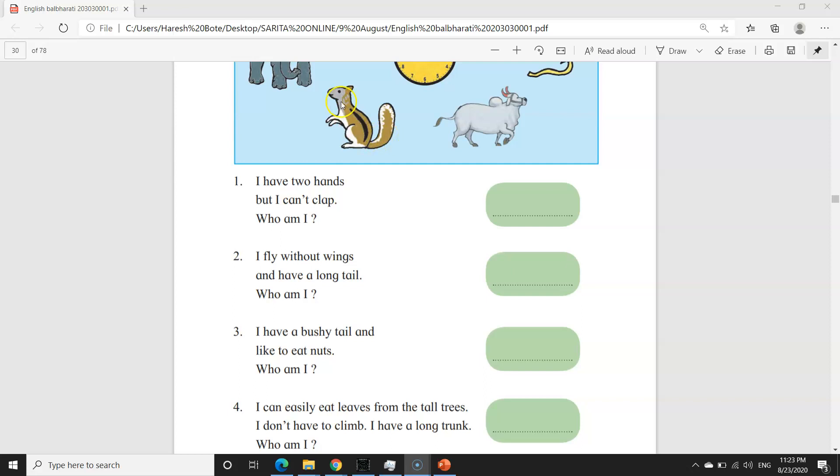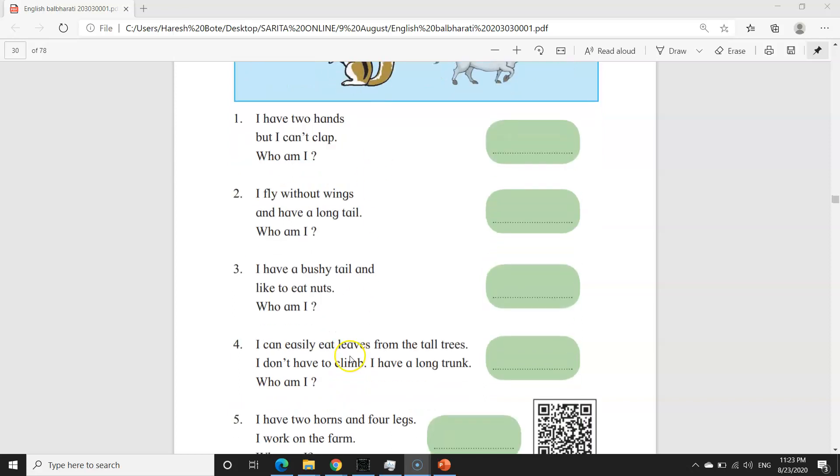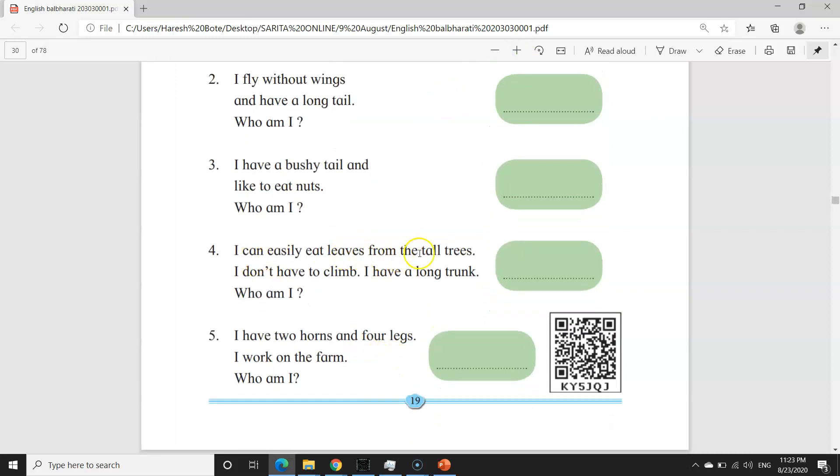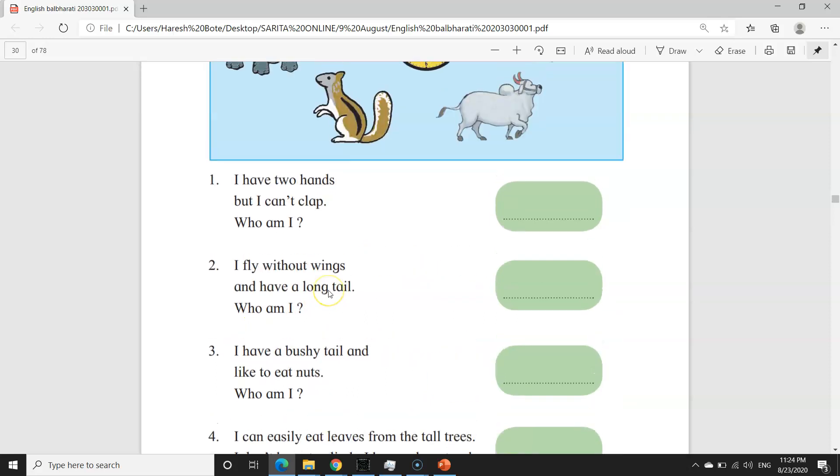Fourth. I can easily eat leaves from the tall trees. Easily manzhe sahach pane, leaves manzhe pane, from manzhe chavarun, tall manzhe unca, trees manzhe zhada. Me unca zhadaan varun sahach pane tachi pane khau shakto. I don't have to climb, mala chadnayachi climb manzhe chadhne. Mala tyavar chadnayachi gharaz nahi. I have a long trunk, trunk manzhe sond. Mala mothi sond aahe. Who am I? Kone aahe mi?